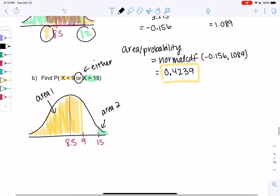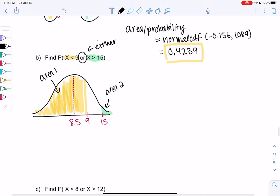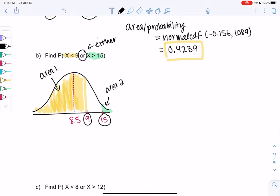So we need to find a z-score. So let's find a z-score for 9 and 15. So 9 will be 9 minus the mean of 8.5 over 3.215. And 15 will be 15 minus the mean of 8.5 over 3.215.